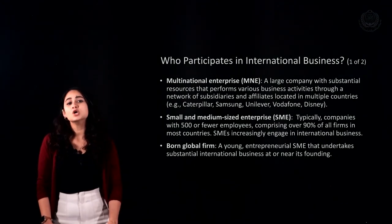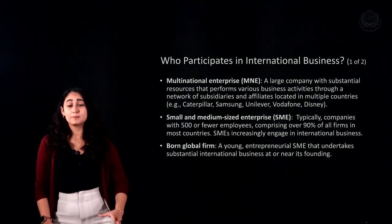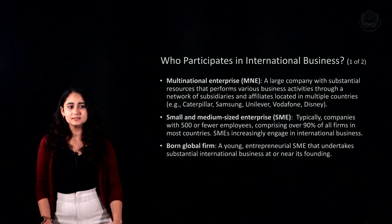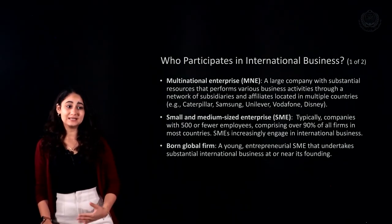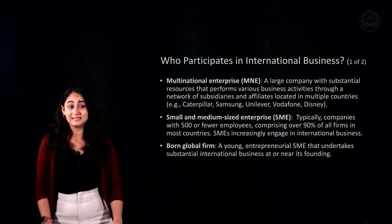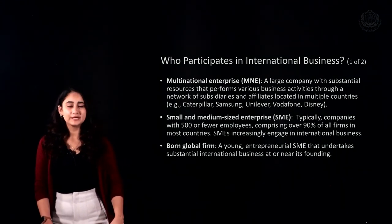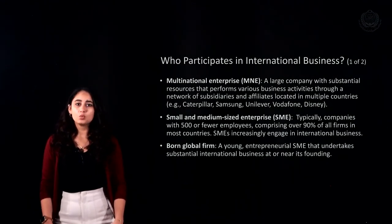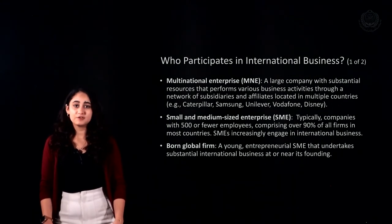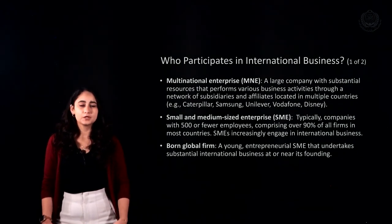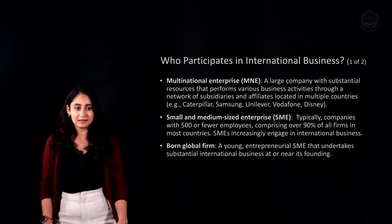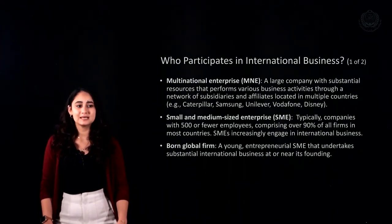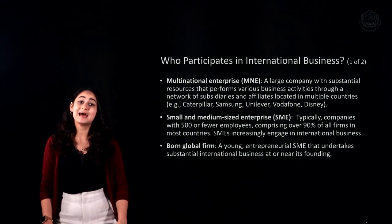The second type of participant is small and medium-sized enterprises, known as SMEs — typically companies with 500 or fewer employees whose resources are more limited than MNEs. SMEs comprise over 90% of firms in most countries and usually engage in international business, though not yet at the global scale of MNEs. A third type of participant is born global firms — young entrepreneurial SMEs that undertake substantial international business at or near their founding. Examples include Instagram and Facebook, platforms born to target the world from the start.